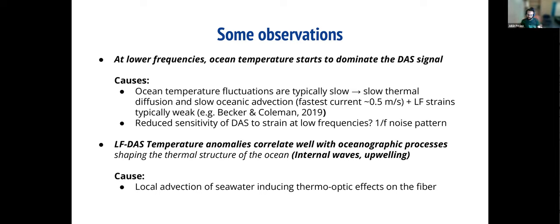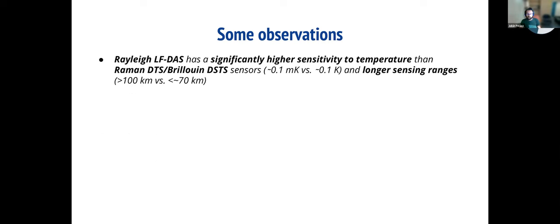One important point is that Rayleigh-based systems like DAS tend to have much higher sensitivity to temperature than Raman or Brillouin sensors — we're talking about an order of magnitude to 1,000 times higher for DAS. Also, you can achieve longer sensing ranges with DAS. There are recent reports of measurements achieved over hundreds of kilometers without repeaters, which is quite encouraging. Currently, DTS sensors are a bit more restricted in range — the farther you go, the more you have to average in both time and space, so you start to lose resolution.